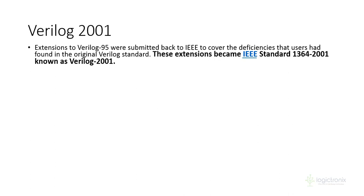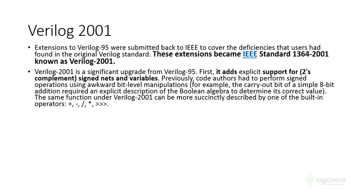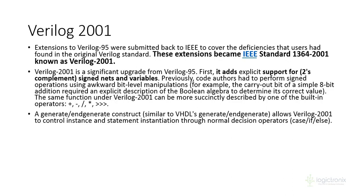Verilog 2001 is the revision of Verilog 95, standardized by IEEE as 1364-2001. It is an upgradation of 95 and includes complement signed nets and variables, updated Verilog operators. Similar to VHDL, it also has generate and engineered constructs, which can be utilized for different control statements and instantiation.